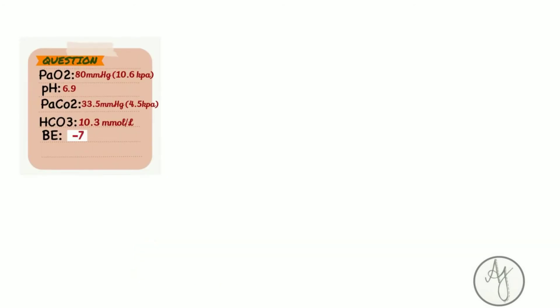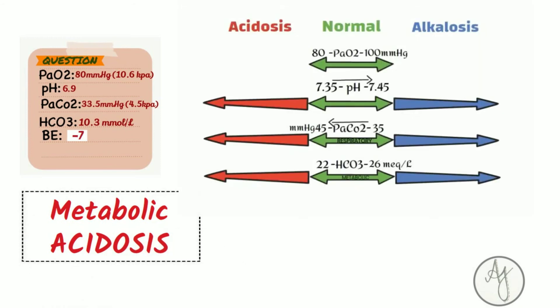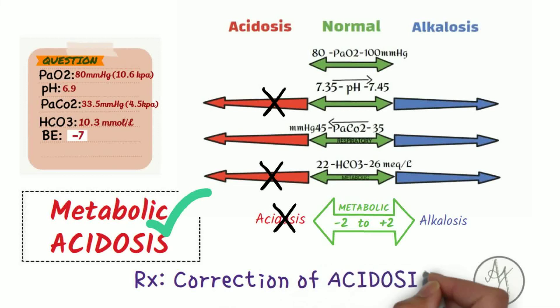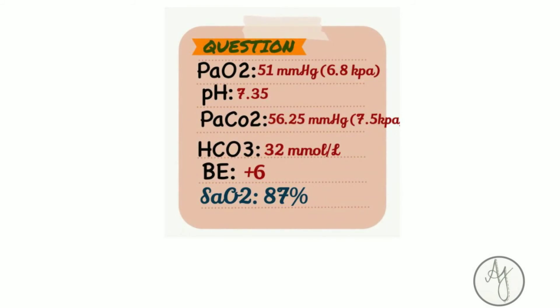This is a simple one — it is metabolic acidosis. There's a decrease in pH, a decrease in bicarb, and a decrease in base excess, therefore it's metabolic acidosis. Recalling the causes, this could be DKA requiring insulin, or other causes like renal failure or sepsis. The treatment is always correction of the acidosis.